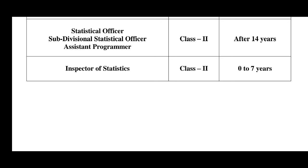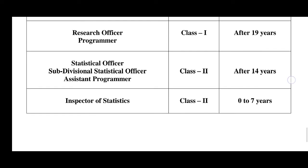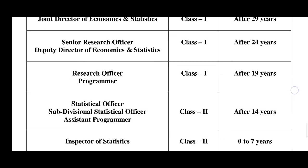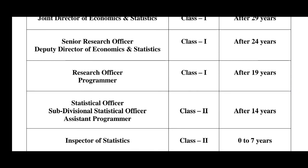A Statistical Officer and Assistant Programmer are Class-II positions. Moving further, there are Class-I gazetted positions: the second position is Statistical Officer, the third is Research Officer, and the fifth person mentioned is Senior Research Officer, followed by Deputy Director of Economics and Statistics.